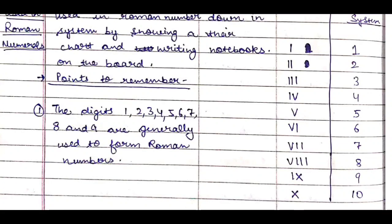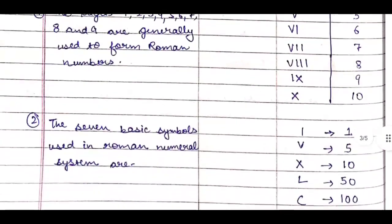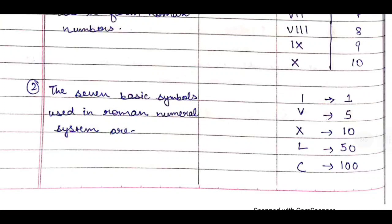We will tell them: The digits 1, 2, 3, 4, 5, 6, 7, 8, and 9 are generally used to form Roman numbers. Then next point: The seven basic symbols used in Roman numeral system are—we will tell them these symbols are very basic ones which are repeated or subtracted for addition.